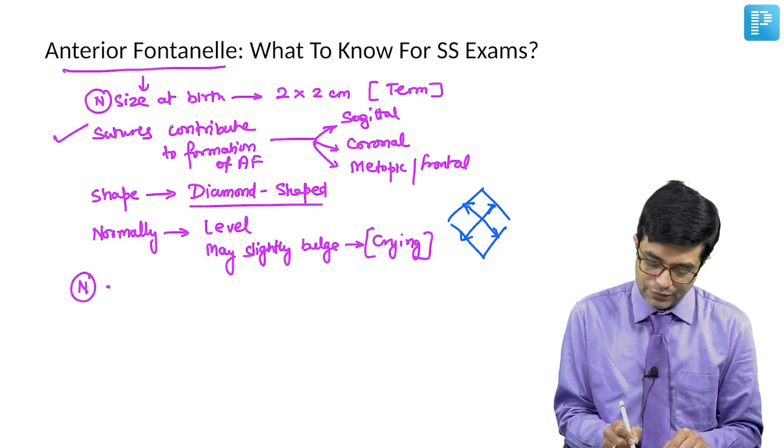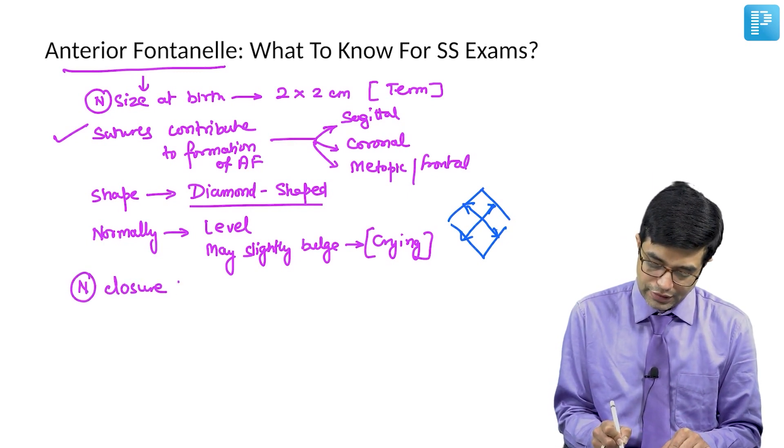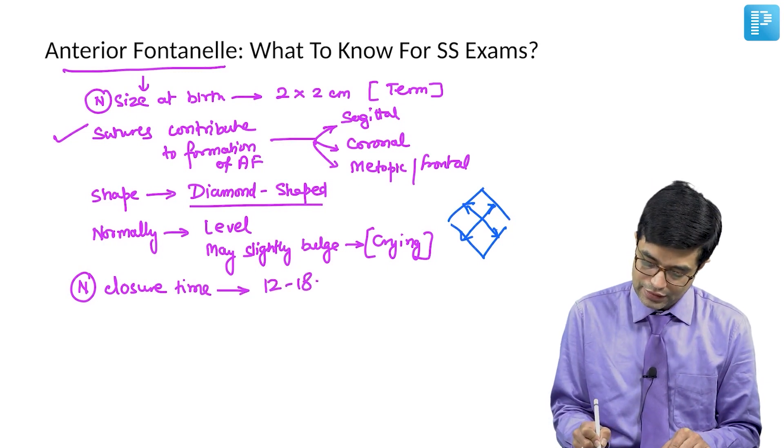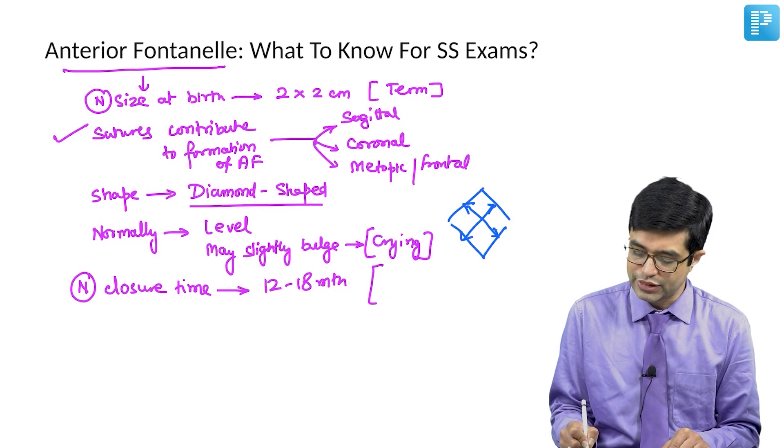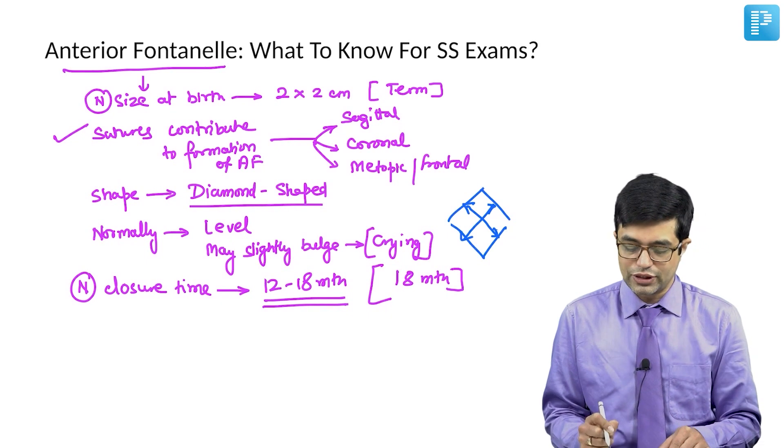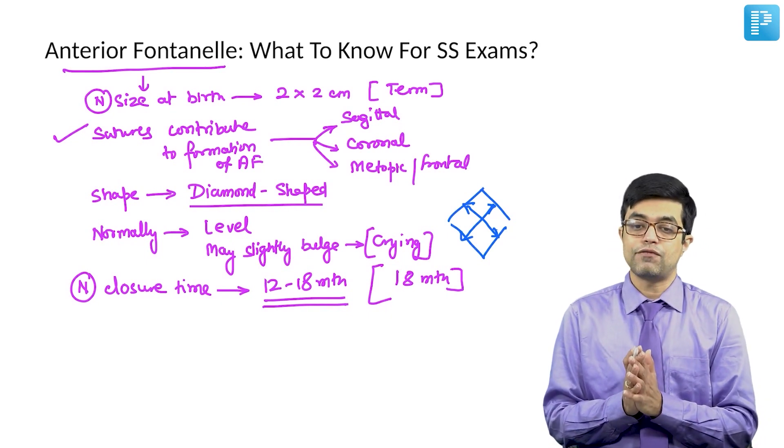What is the normal closure time for anterior fontanel? The normal closure time is 12 to 18 months. If you have to choose a single value, the answer is 18 months.